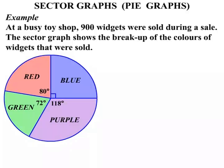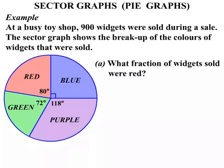I wonder why it's called a pie graph. What fraction of widgets sold were red? Let's look for our red sector. You can see the angle. It's 80 degrees out of a total of 360 degrees. The fraction is 80 over 360.